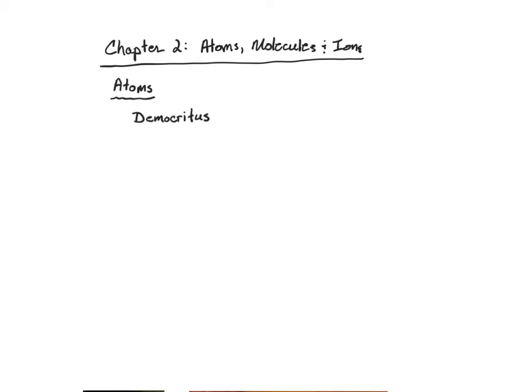What Democritus said was that all of matter was composed of these things called atoms. Actually, he called it atomos, meaning indivisible.